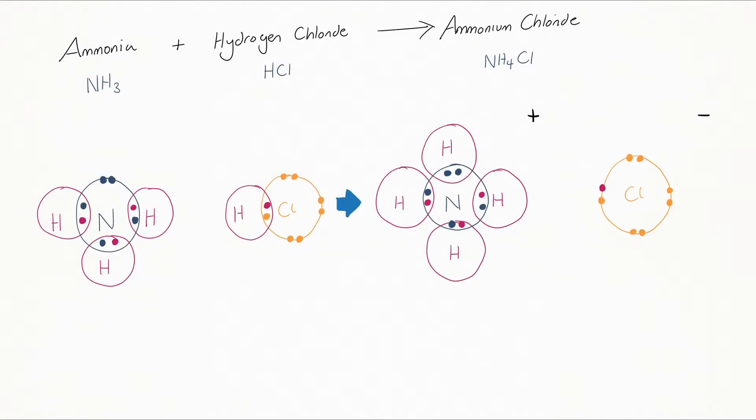Now in the last example, we had a proton that reacted with ammonia to form ammonium. But where did that proton come from? Let's use another example. In this example, we have the reaction between ammonia and hydrogen chloride to form ammonium chloride: NH3 plus HCl to form NH4Cl.